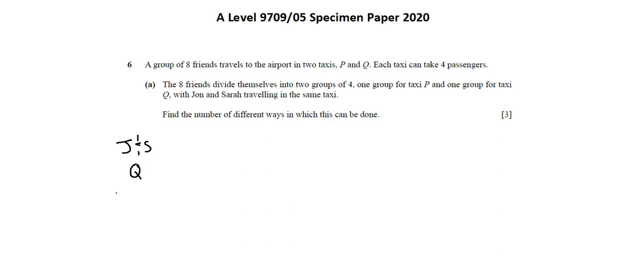So, let's look at John and Sarah in taxi Q. Of the four seats in taxi Q, two are taken by John and Sarah, two remain. Out of the original group of eight, John and Sarah are no longer available for choosing, so we have six choose two. Again, we're using combinations because the order or the arrangement is not important.